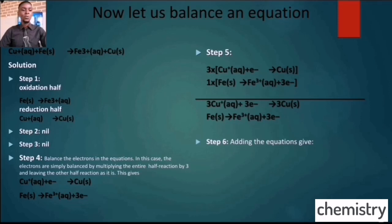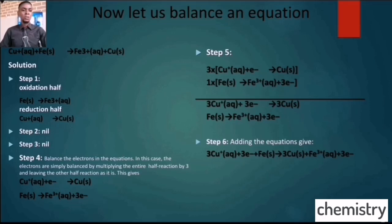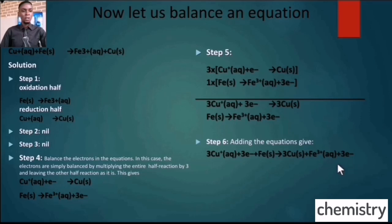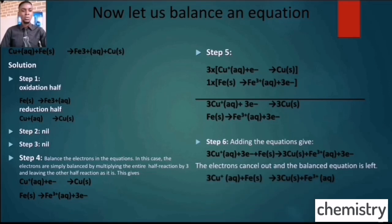Step seven: add the equations together. We add the reactant side of the first equation and the reactant side of the second equation, and similarly for the product sides. Lastly, we cancel out the electrons — we have three electrons on each side, so they cancel out — giving us our balanced chemical equation.